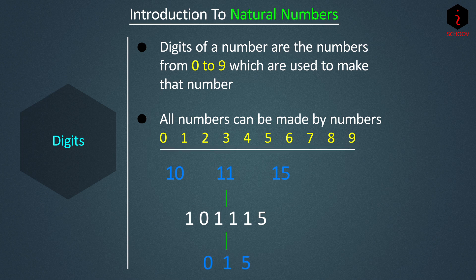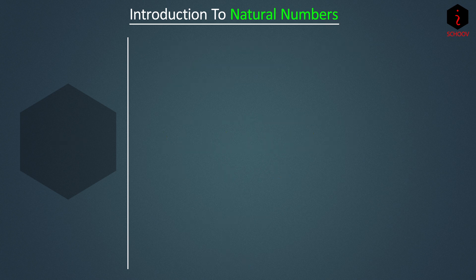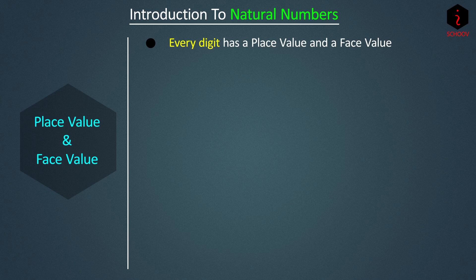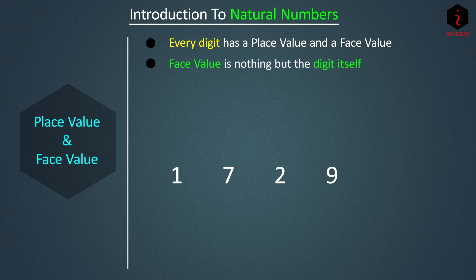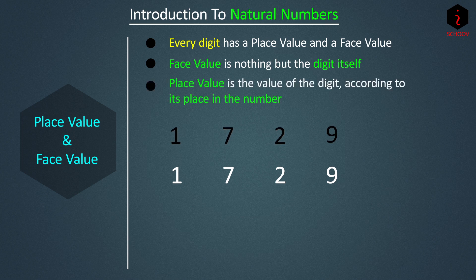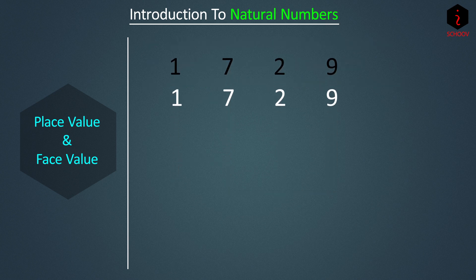Now let's understand place value and face value. These belong to a digit of a number — every digit has both a place value and a face value. Take the number 1729. Face value is simply the digit itself: face value of 1 is 1, of 7 is 7, of 2 is 2, and of 9 is 9. For place value, we always start from the right — the first place is ones, the second is tens, the third is hundreds, and the fourth is thousands.